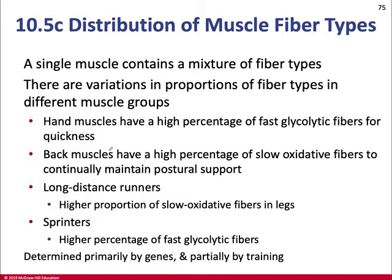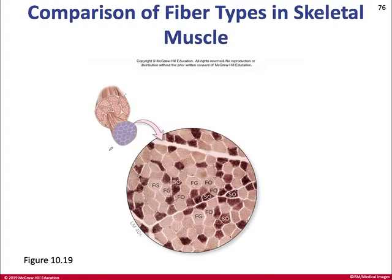Hand muscles are mostly fast glycolytic; back muscles are slow oxidative. Genetics plays into fiber composition, but training is a big factor. If you want to get big and powerful, you lift weights or do sprinting — but cardiovascular fitness and endurance are compromised. If all you do is aerobic work, you'll have tremendous cardiovascular fitness but won't necessarily be very powerful. You can see a cross-section through a fascicle showing the differences in muscle fibers.